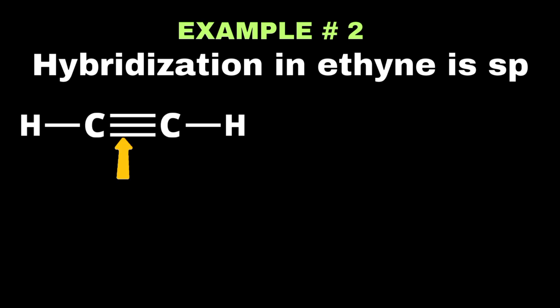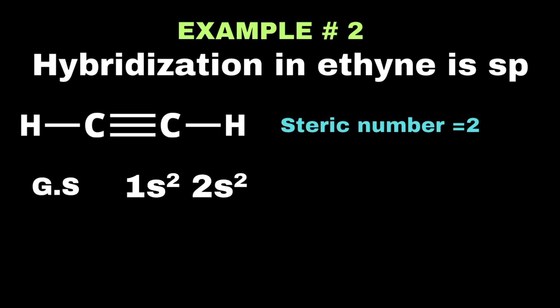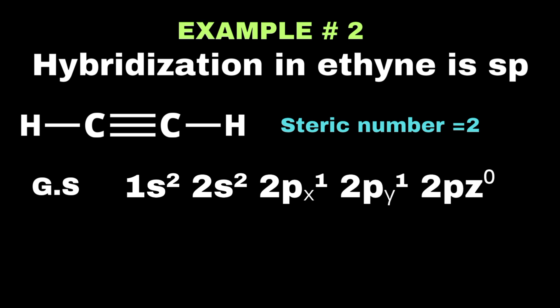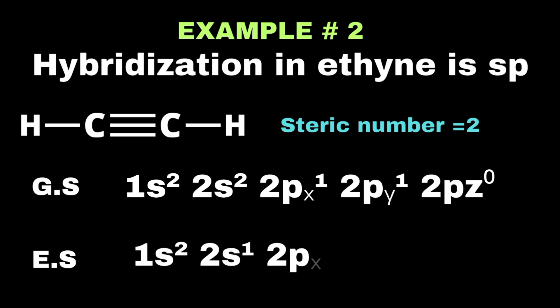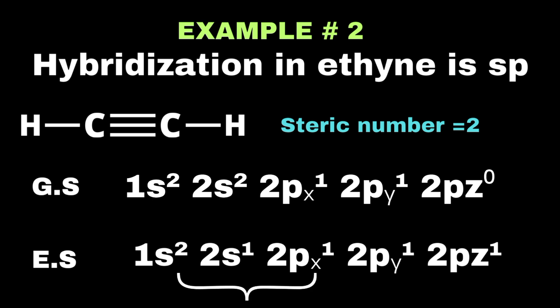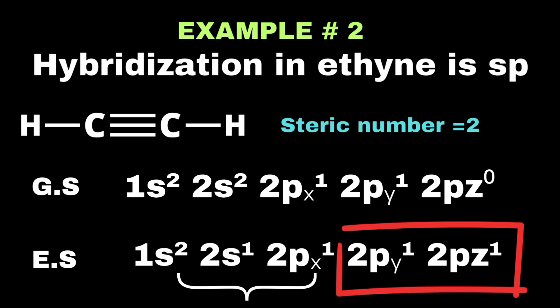Let's take one more example: the hybridization state of carbon in ethyne is sp, confirmed by the steric number. Since carbon forms one triple bond with another carbon and one single bond with hydrogen, the overall steric number is two. Considering the ground state electronic configuration of carbon, an electron is promoted to the excited state. Only one s and one p atomic orbital overlap to form two sp hybridized orbitals. The 2py and 2pz orbitals are not involved in overlapping — they are unhybridized orbitals that participate only in the formation of pi bonds.